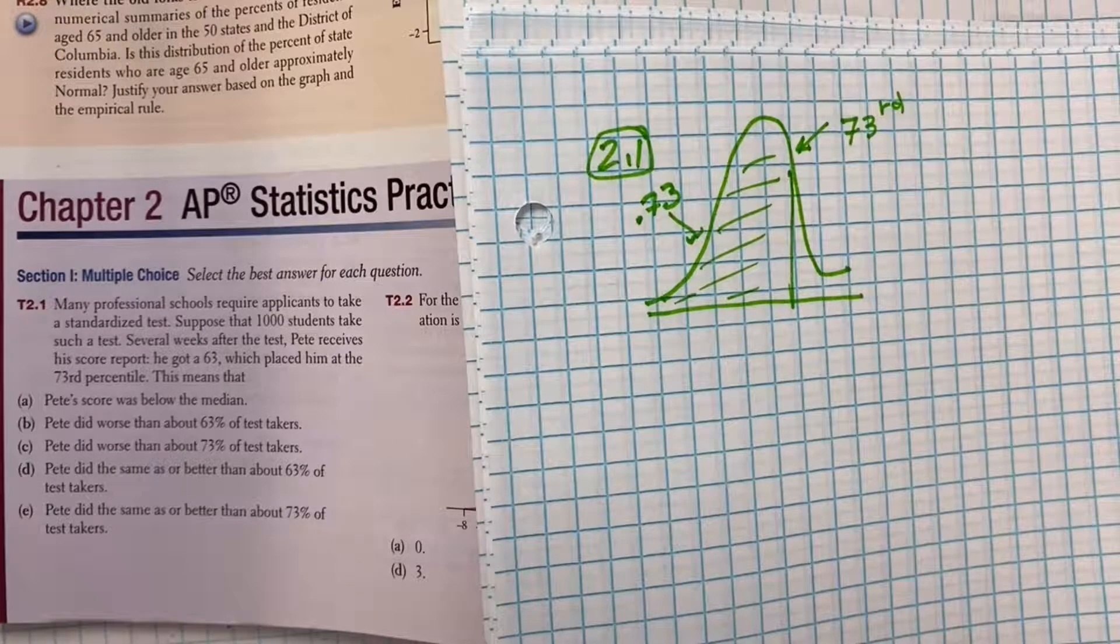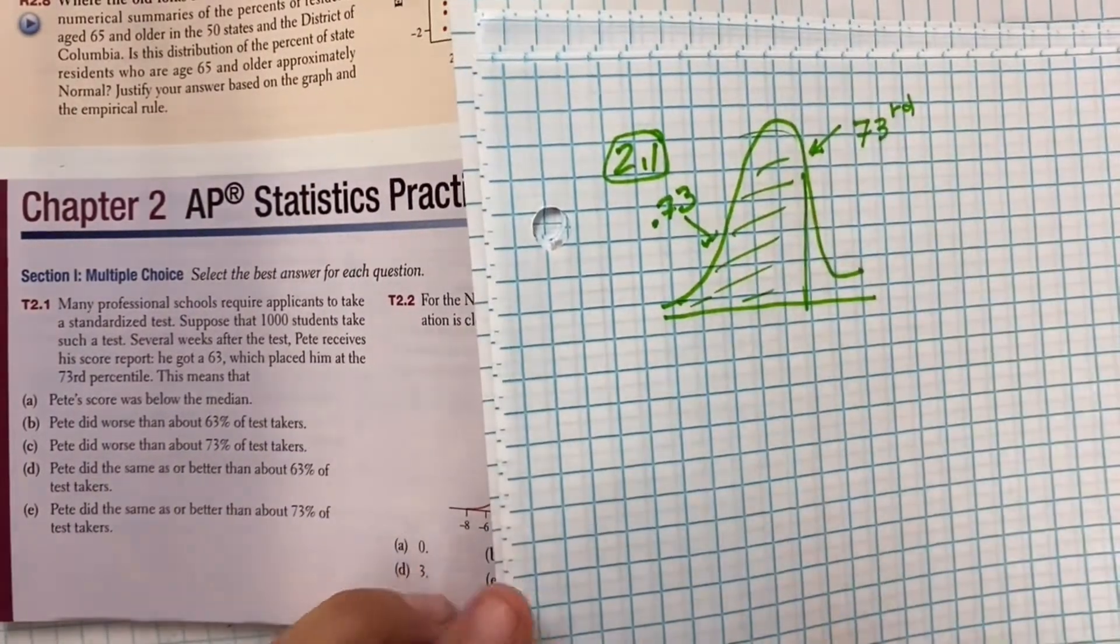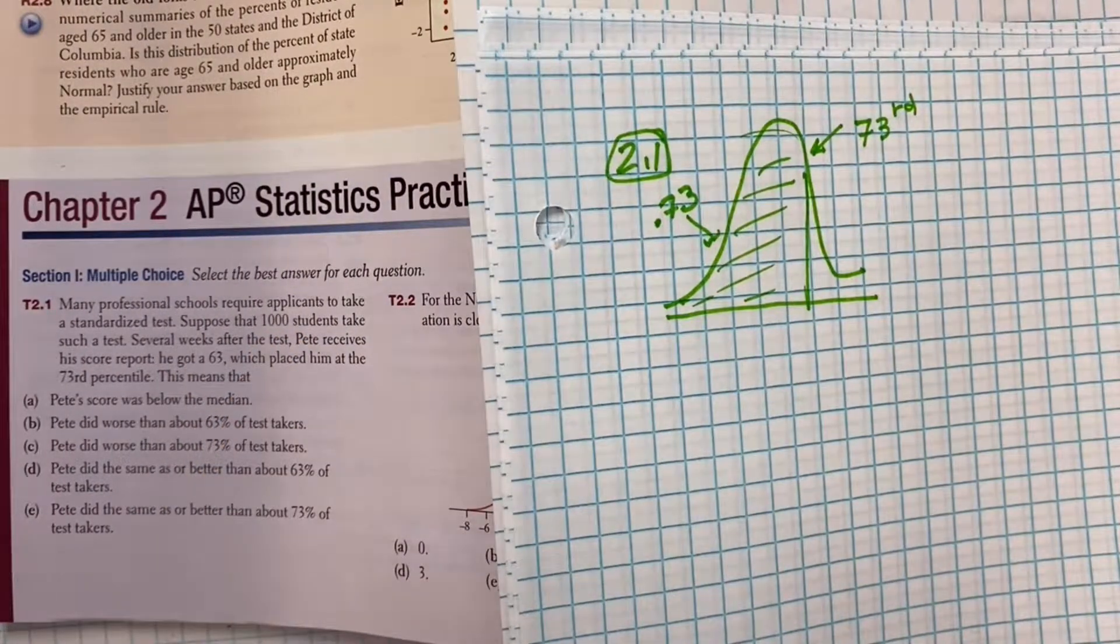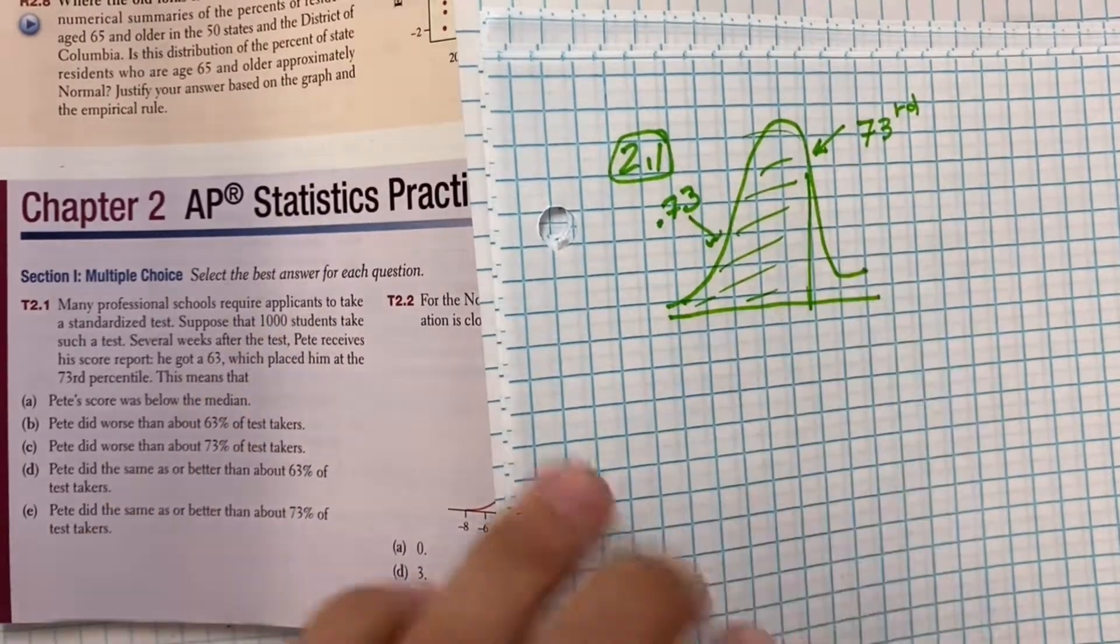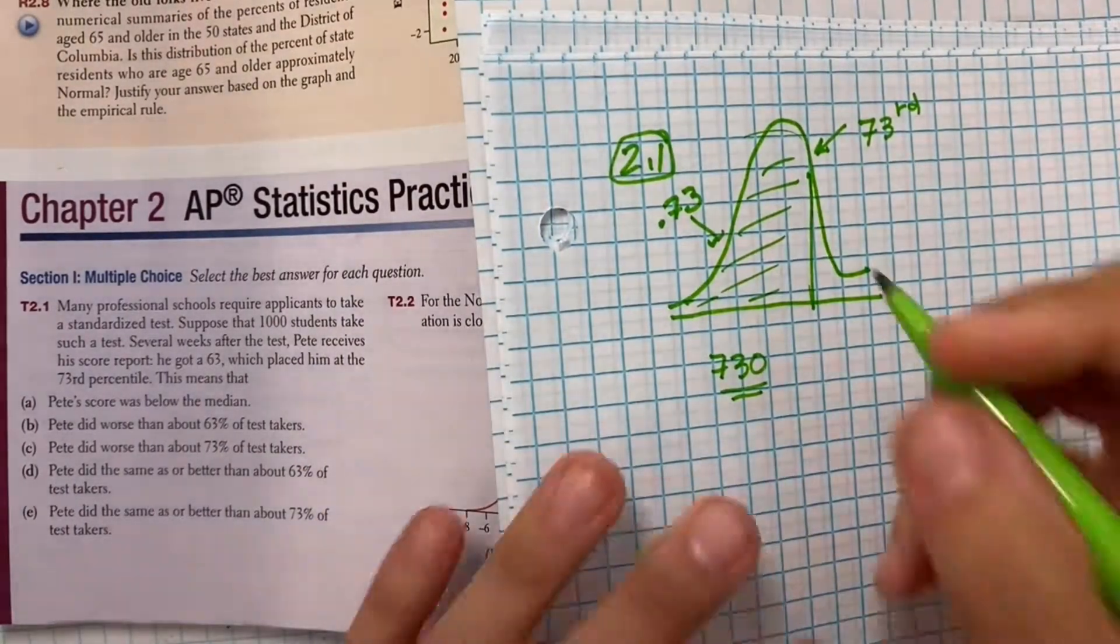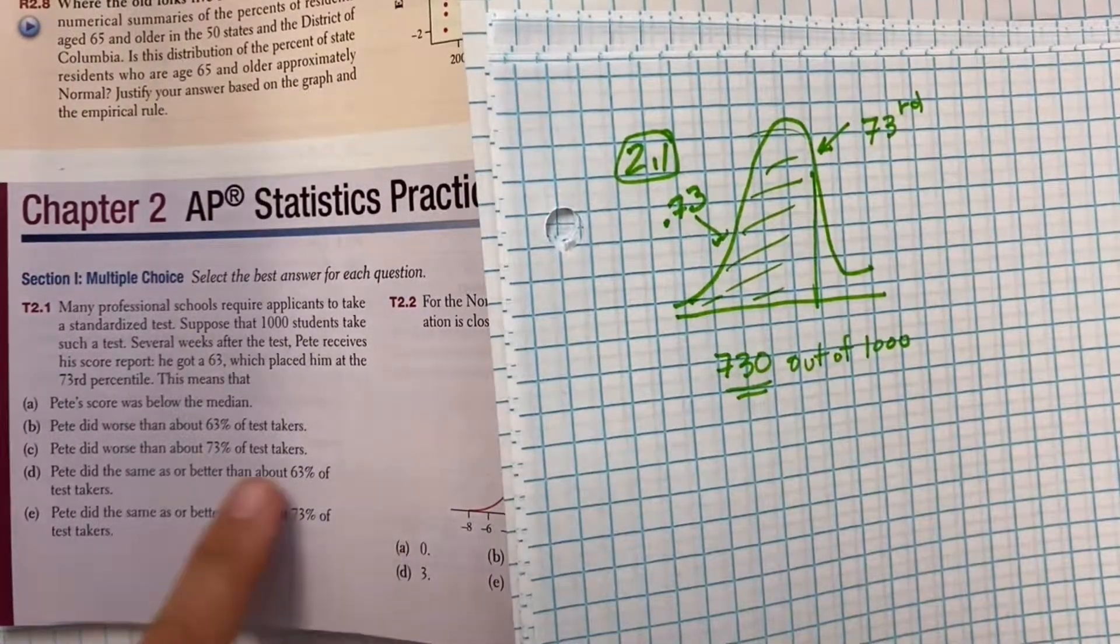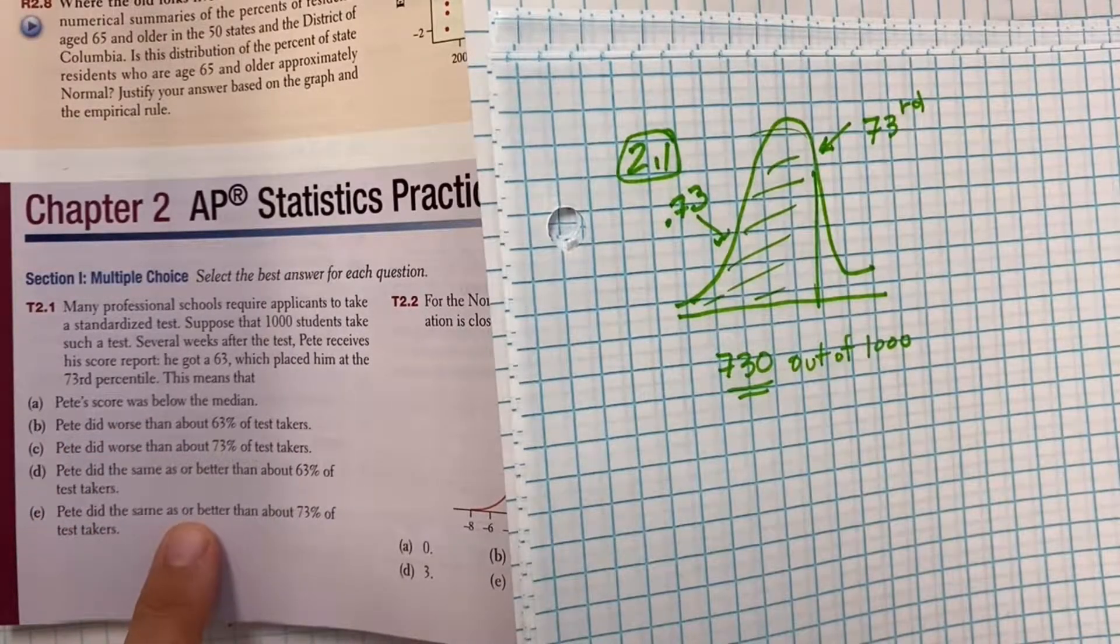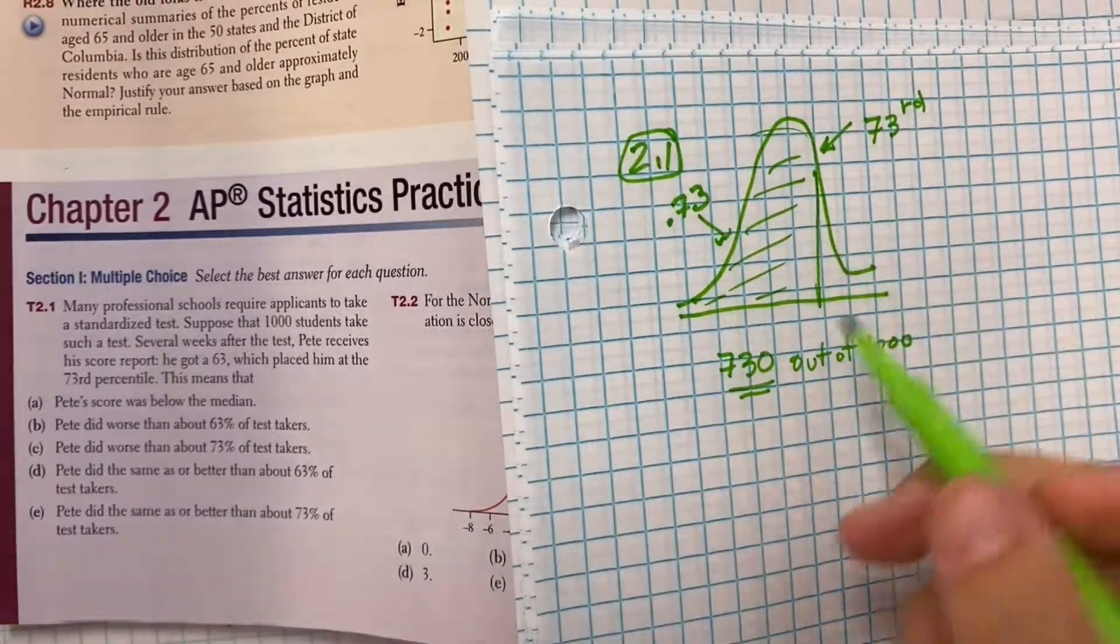Question 2.1. We're supposing it's a standardized test, and it sounds like he's in the 73rd percentile. So that means the area to the left of his curve is 0.73, if the area under the curve is 1. That's what all that means. It also means Pete did at or better, if there was 100 people that took the test, 73 people.